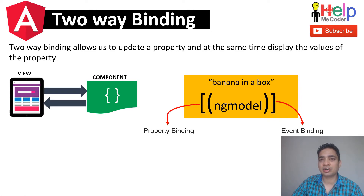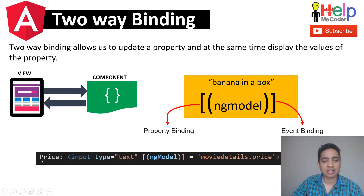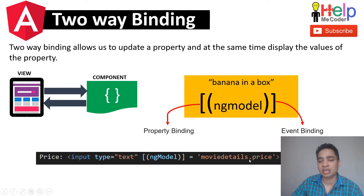The simplified syntax just encloses with square brackets, inside which we have parentheses, we write ngModel, and then provide the equivalent expression — in this case movieDetails.price. This single declaration can handle binding in both directions.